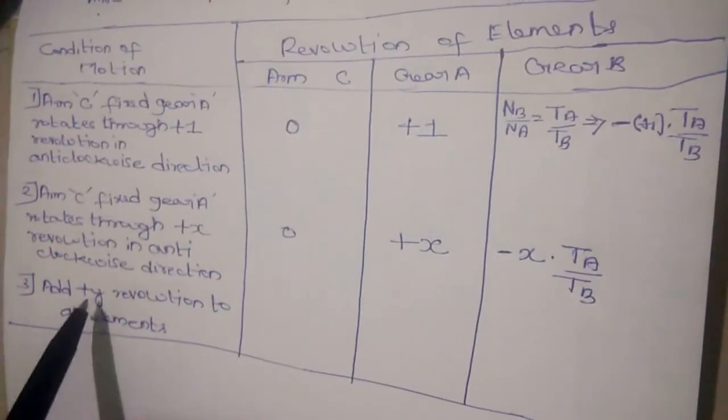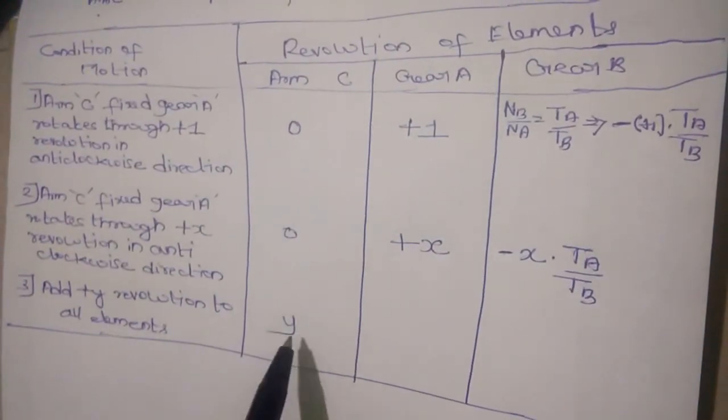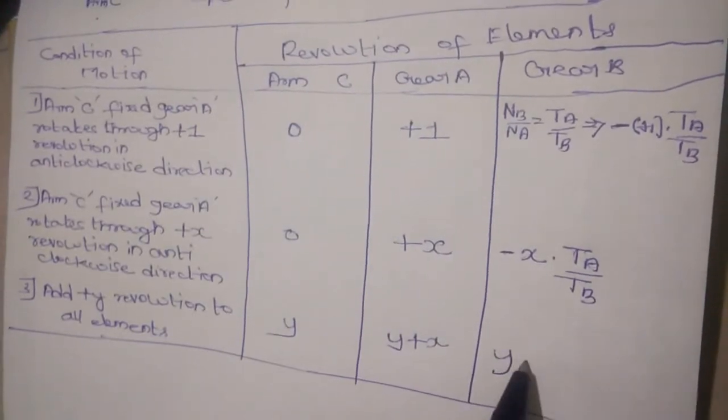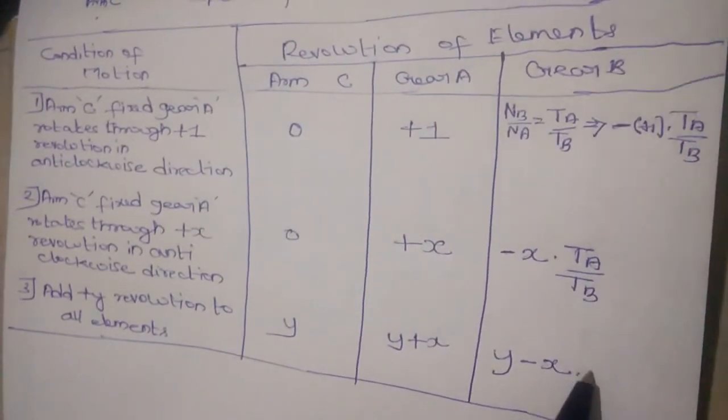Add plus y revolution to all elements. Use y, y plus x, y minus x into TA by TB.